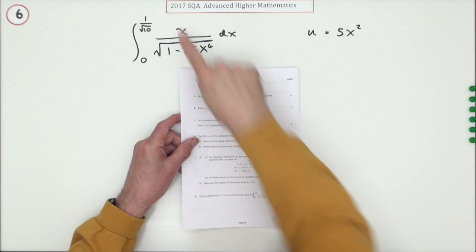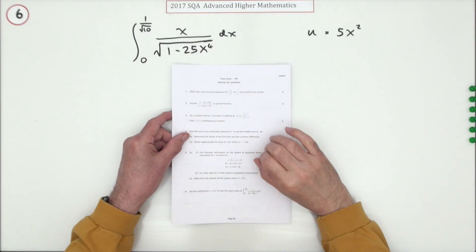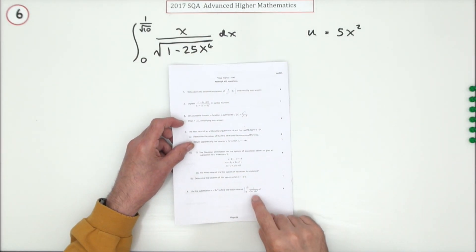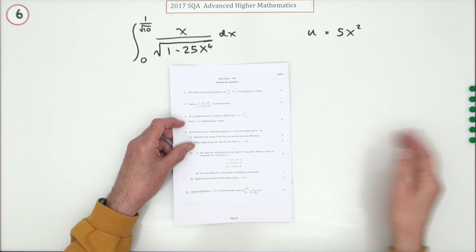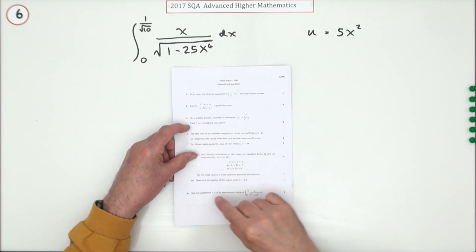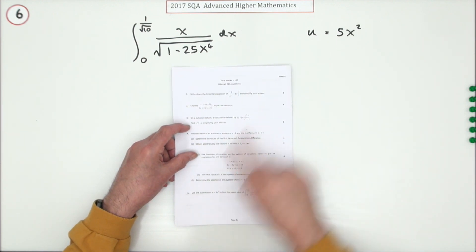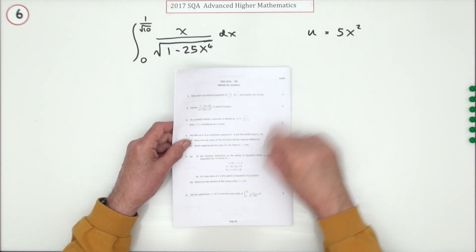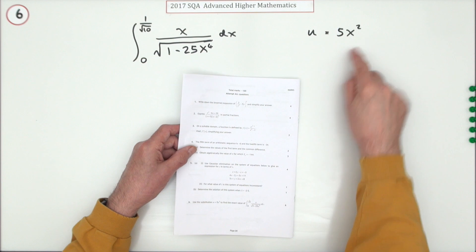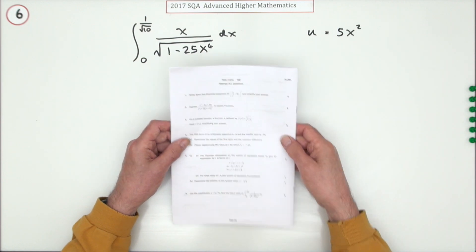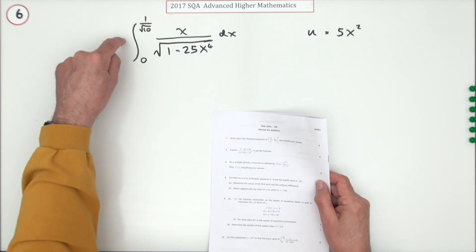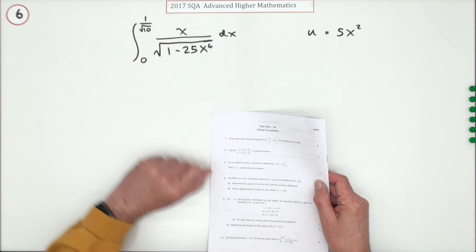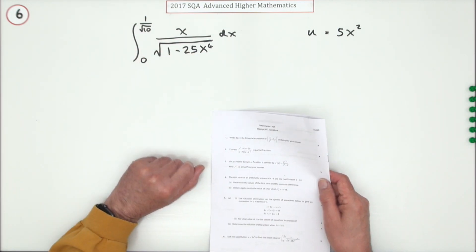Number six from the 2017 Advanced Higher Maths — an integration for six marks, an integration by substitution. It says use this substitution to find the exact value of this.